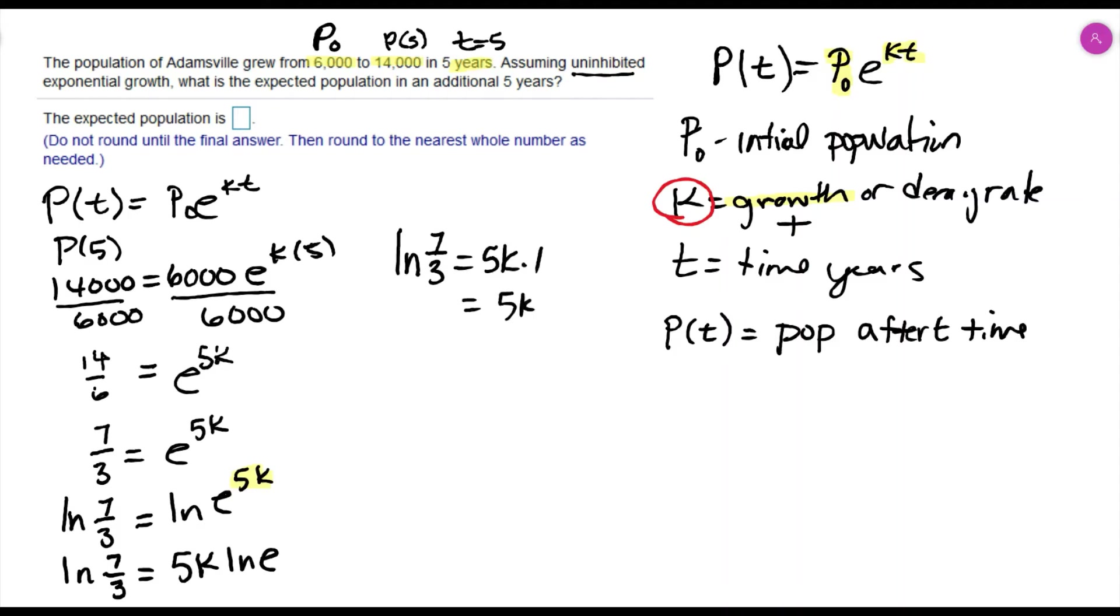So that's 5k times one, which is just 5k. I can divide both sides by five, and now I have k, the growth rate: natural log of seven-thirds over five.